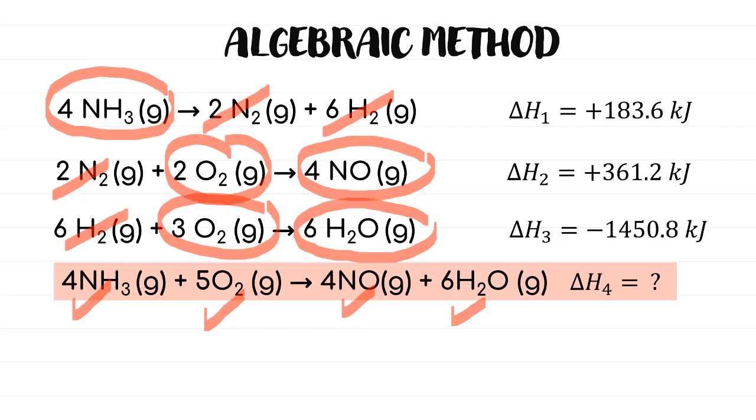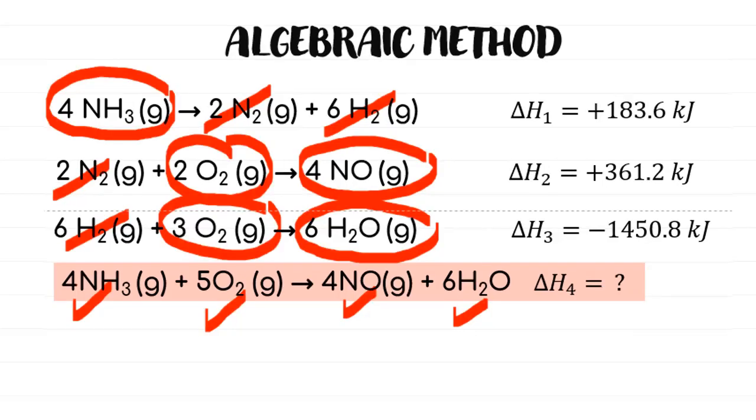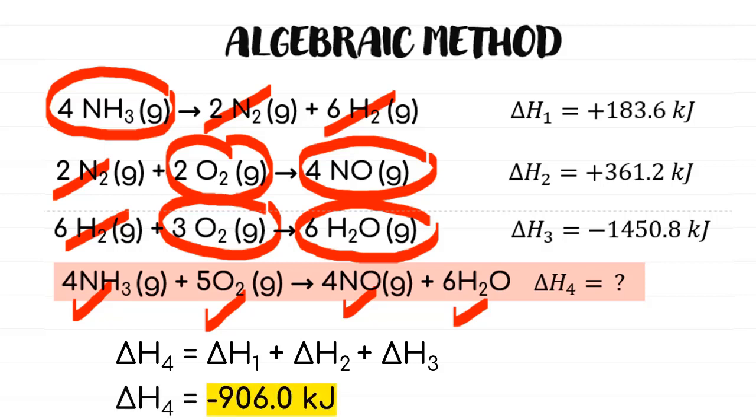That is for algebraic method. The final working is by doing some mathematical works by rearranging the equations back and forth. Now, we are going to add everything together to get the delta H4. 183.6 plus 361.2 minus 1450.8 kilojoule will give you delta H4 of negative 906.0 kilojoule.